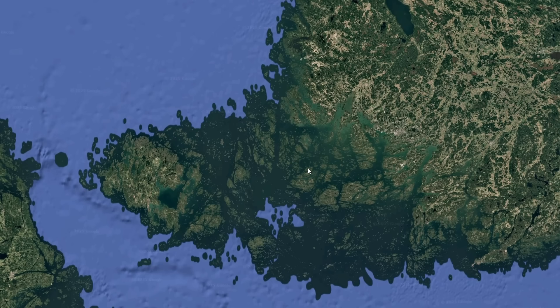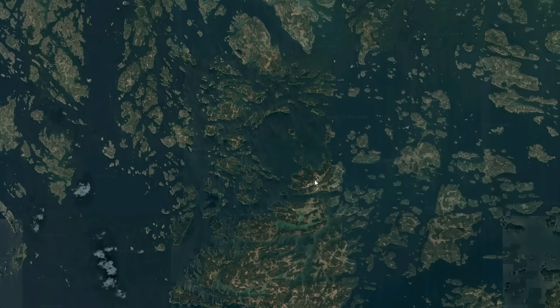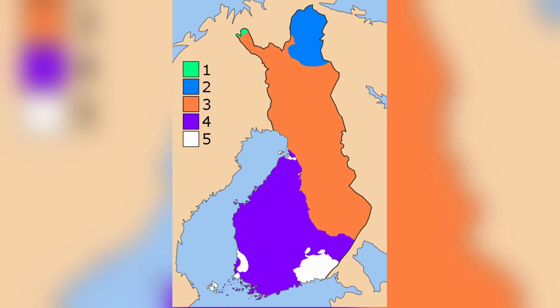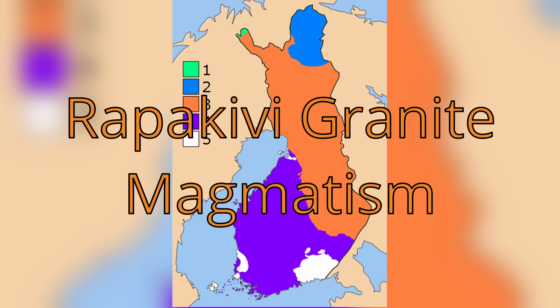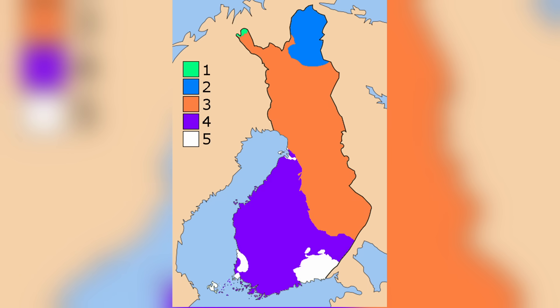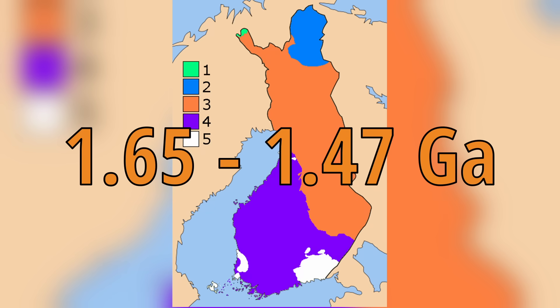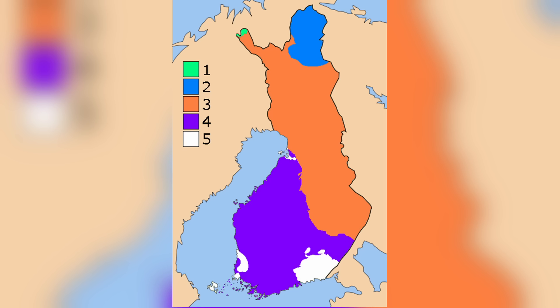You may have noticed that I haven't mentioned the Masala igneous intrusion — one of the two I pointed out at the start of this video. That is because it formed in a completely different magmatism from the 14 I just mentioned. In fact, it formed more than 200 million years later. This period is known as the Rapakivi granite magmatism, and it lasted from 1.65 to 1.47 billion years ago.